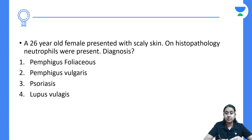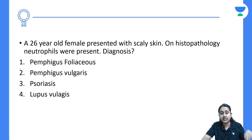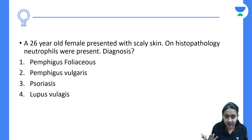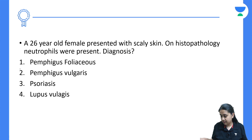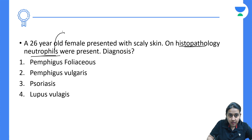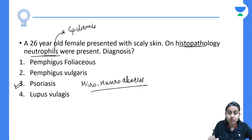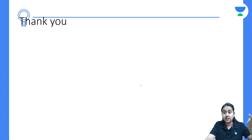The next question: a 26-year-old female presents with scaly skin, and on histopathology neutrophils are present — what is the diagnosis? The presence of neutrophils in the histopathology, specifically in the epidermis, is the pathognomonic histopathological feature of psoriasis. This is called Munro's microabscesses and is the histopathological hallmark of psoriasis.